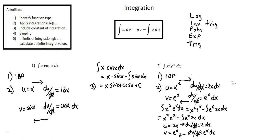And now we have x squared times e to the power of x, minus our second integration by parts: uv minus the integral of v du. Here u is 2x, v is e to the power of x, minus the integral of v which is e to the power of x, and du is 2 dx.